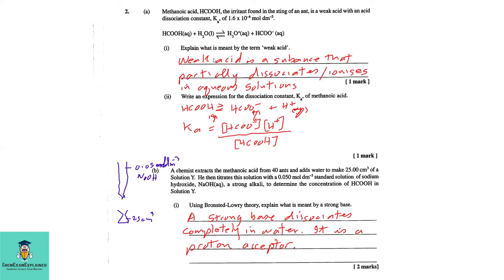A weak acid is a substance that partially dissociates or ionizes in aqueous solution. Part 2: Write an expression for the dissociation constant Ka of methanoic acid.